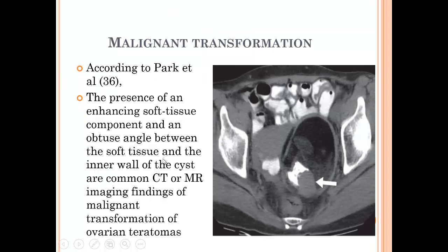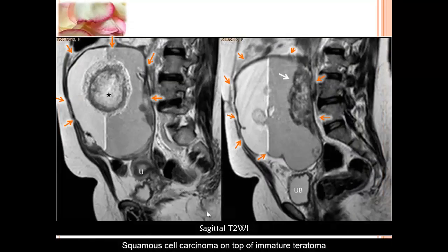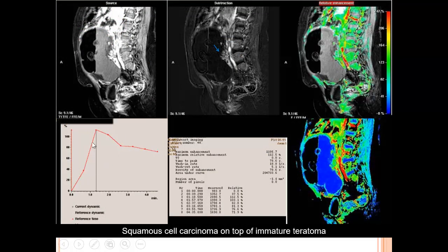Malignant transformation is indicated by the presence of an enhancing solid part. This solid part usually has an obtuse angle with the wall of the cyst, and may replace the calcification in the Rokitansky nodule. Here is a case from our department of squamous cell carcinoma complicating mature cystic teratoma — you can see the fat-fluid level, floating sebum and hair within, and then this vascular mass with an obtuse angle to the cyst wall. On functional MRI it shows malignant criteria: a type 3 washout curve. The most common malignant transformation is squamous cell carcinoma.